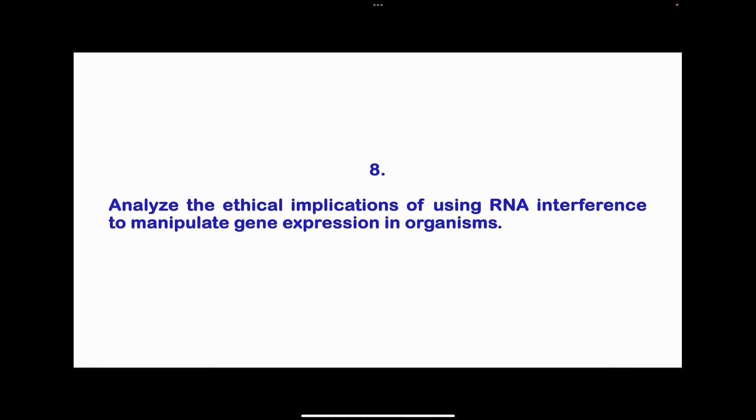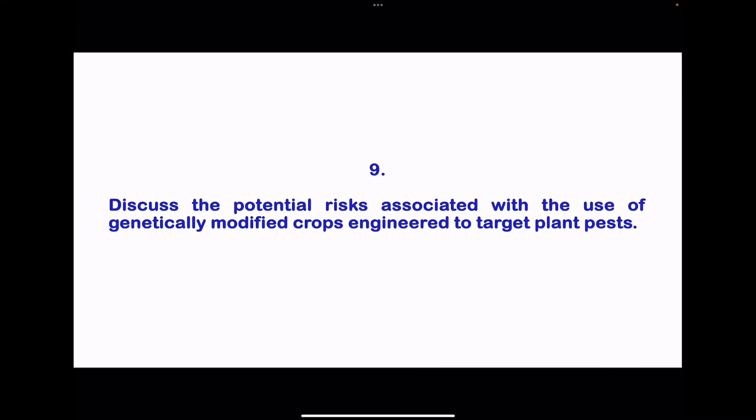Question eight analyzed the ethical implications of using RNA interference to manipulate gene expression in organisms. Here you could say ethical considerations may include concerns about unintended consequences, the potential for off-target effects, and the implications of altering the genetic makeup of the organism.